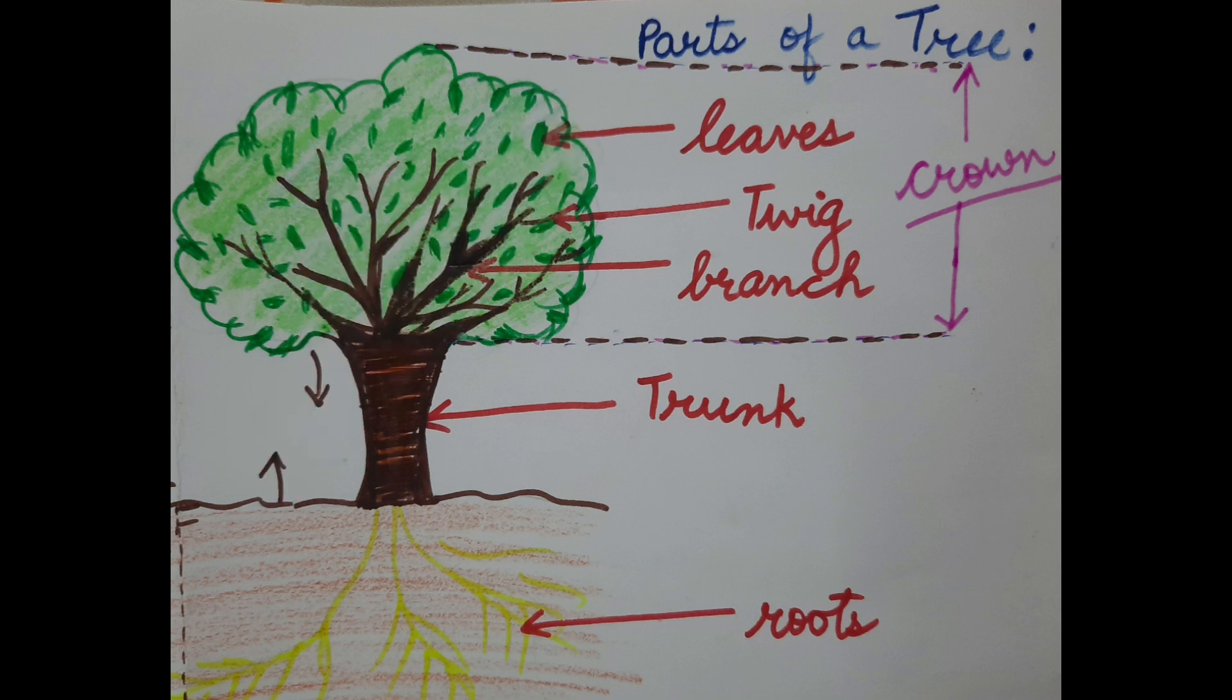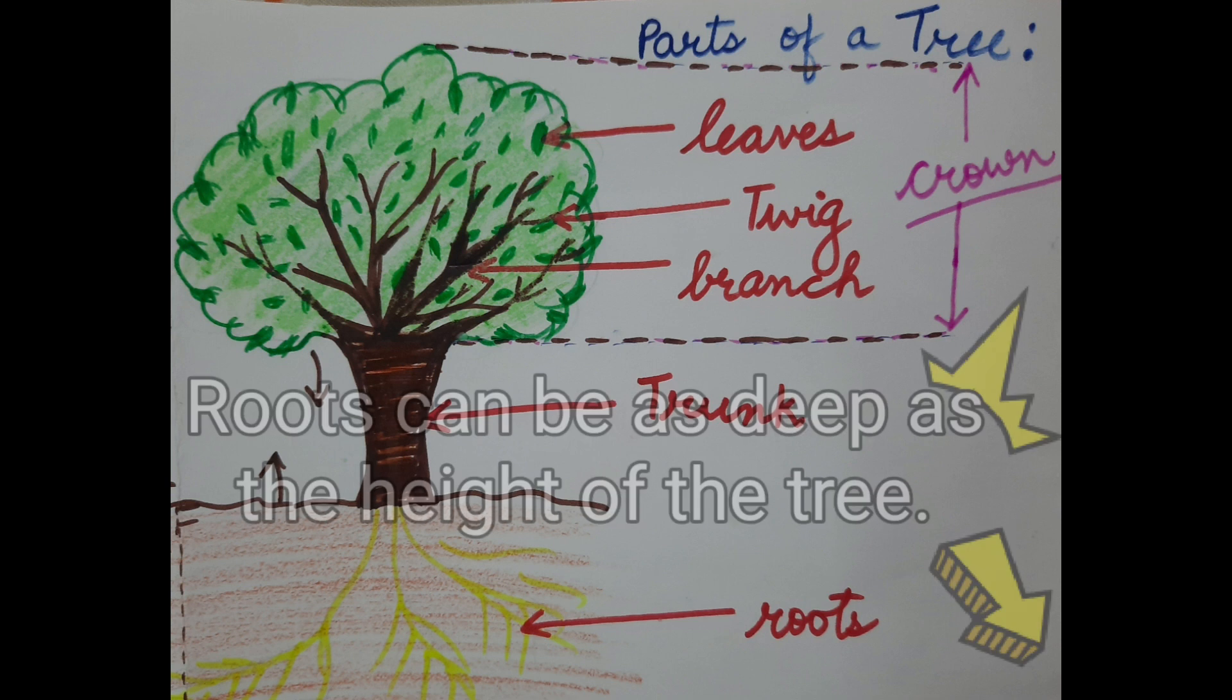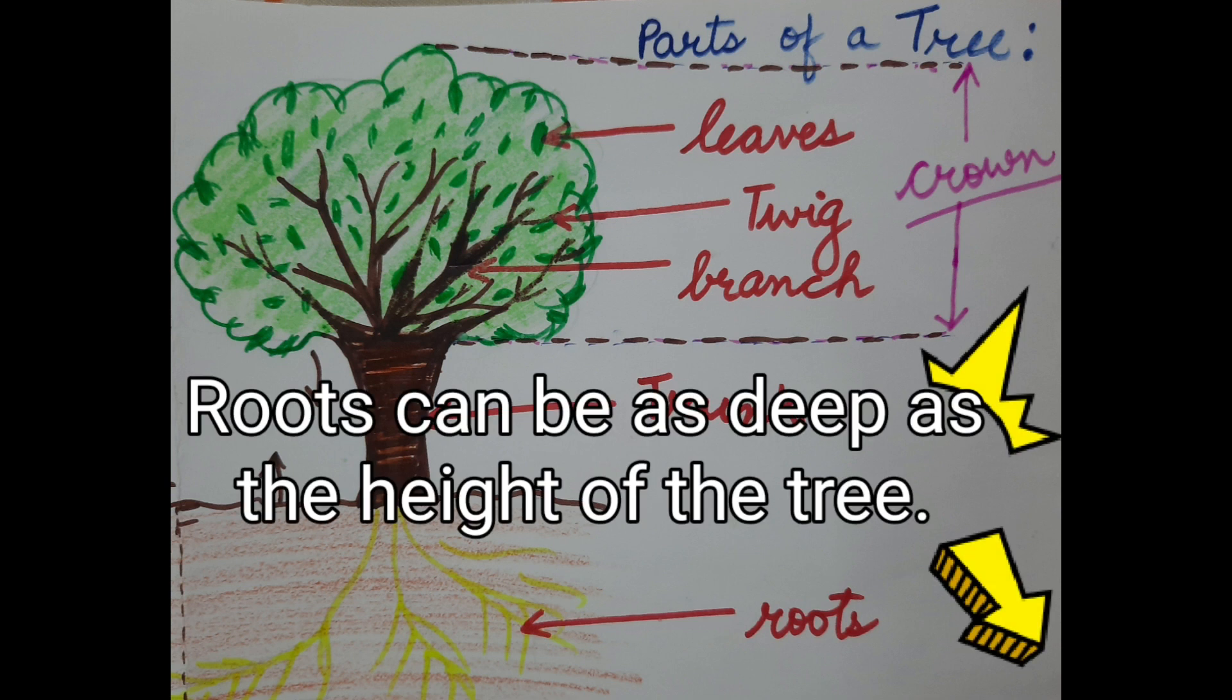Now, coming to the tree. The trees have lots of roots. In fact, you will be surprised to know that the size of the root system is usually as big as the part of the tree above the ground. The tree roots can be as deep as the tree we see above the ground.